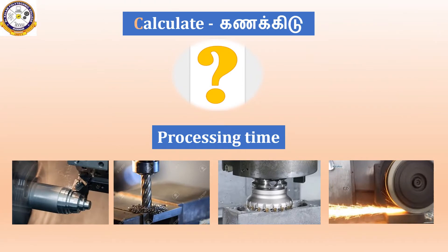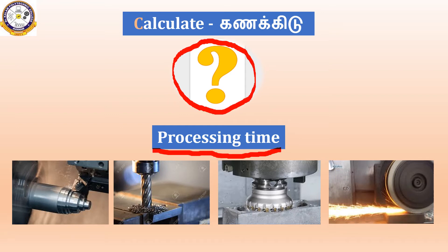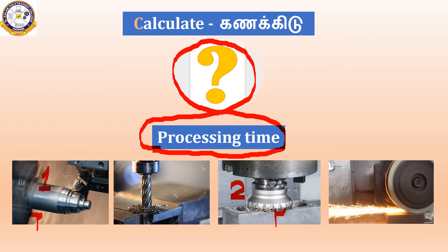The next step in process planning is Calculate — calculate the processing time. For each operation, we determine how much time is needed. For example: turning operation — how many minutes; second operation milling — how many minutes. So we calculate the processing time for each step.